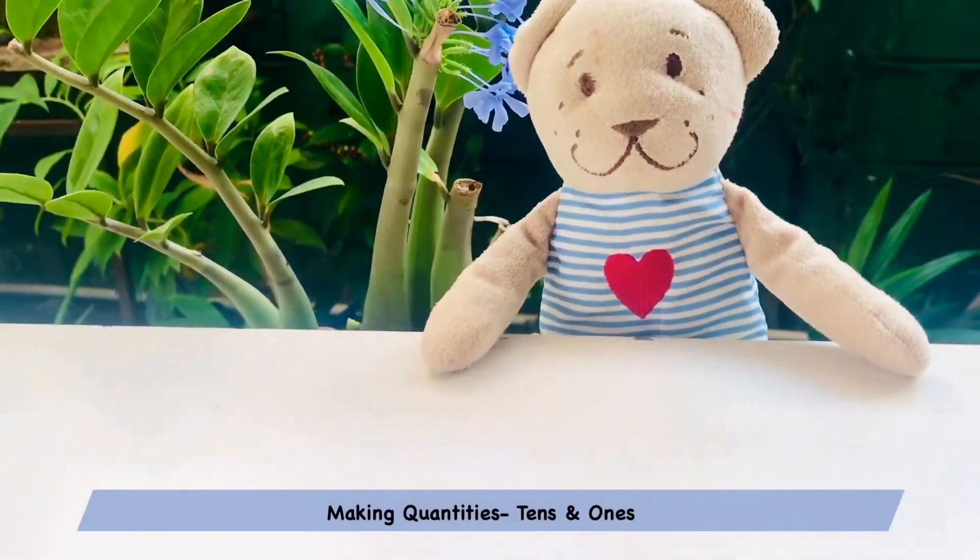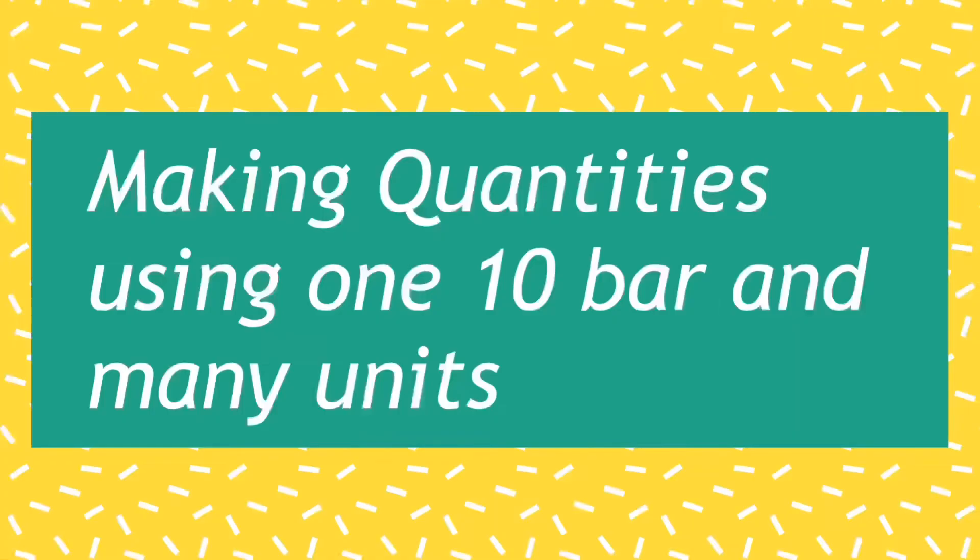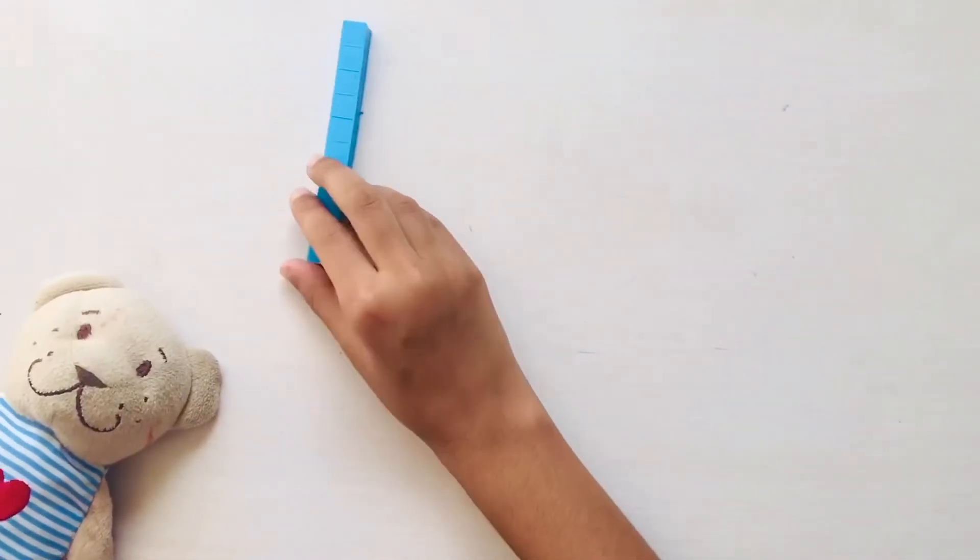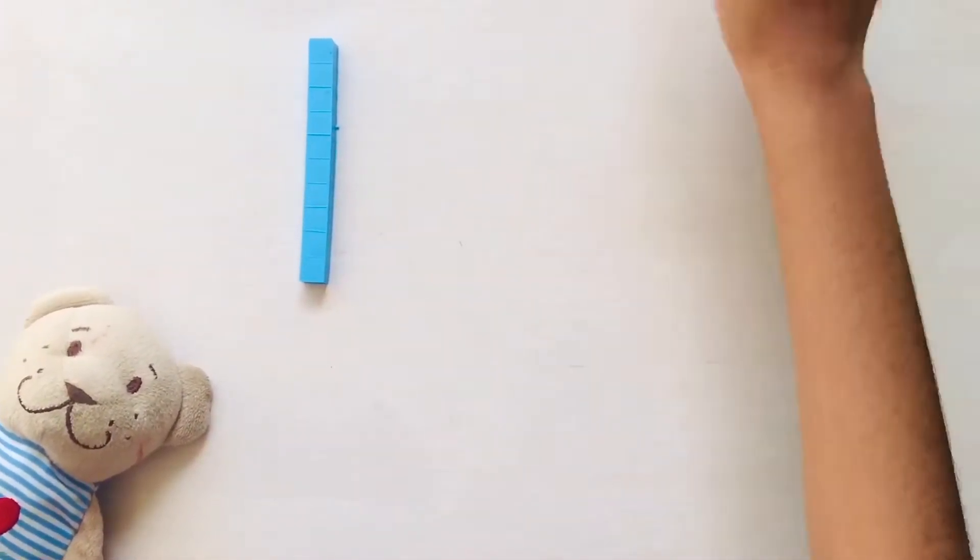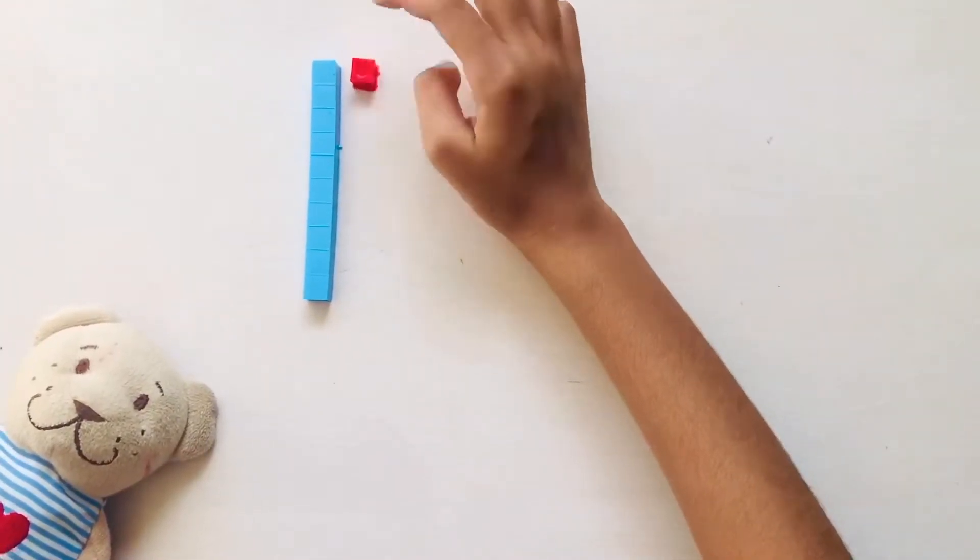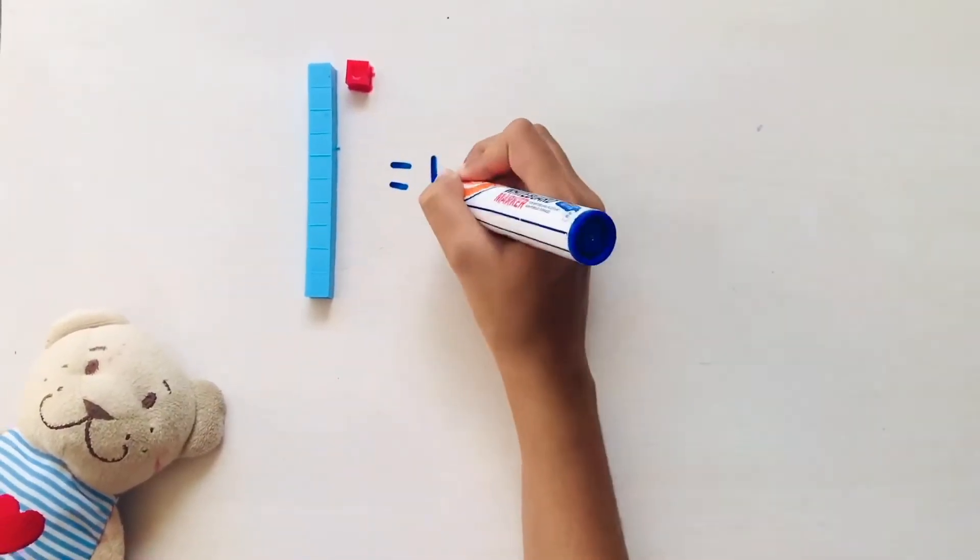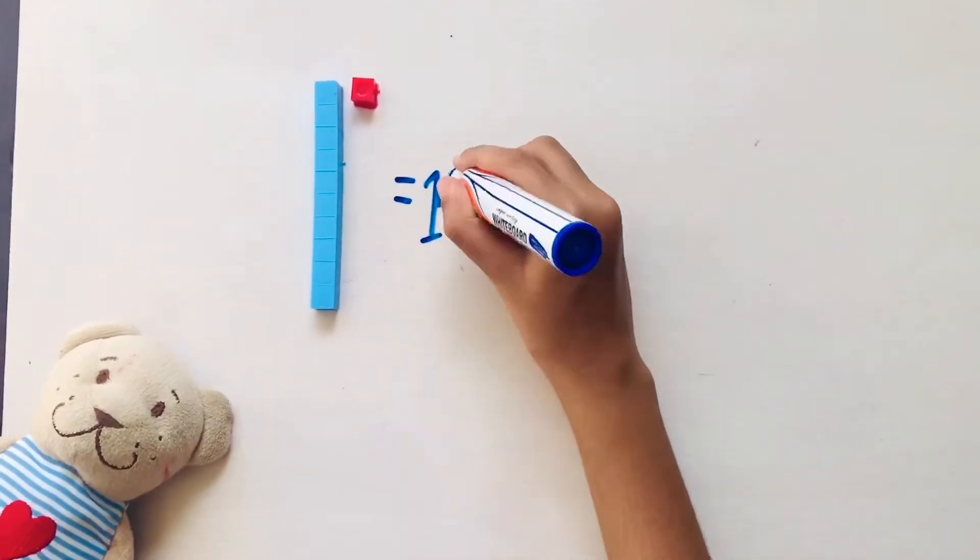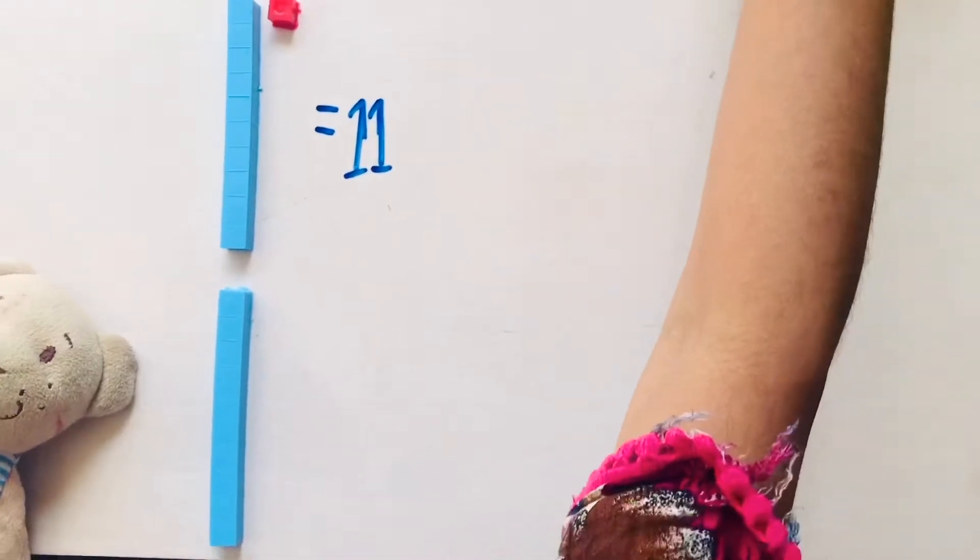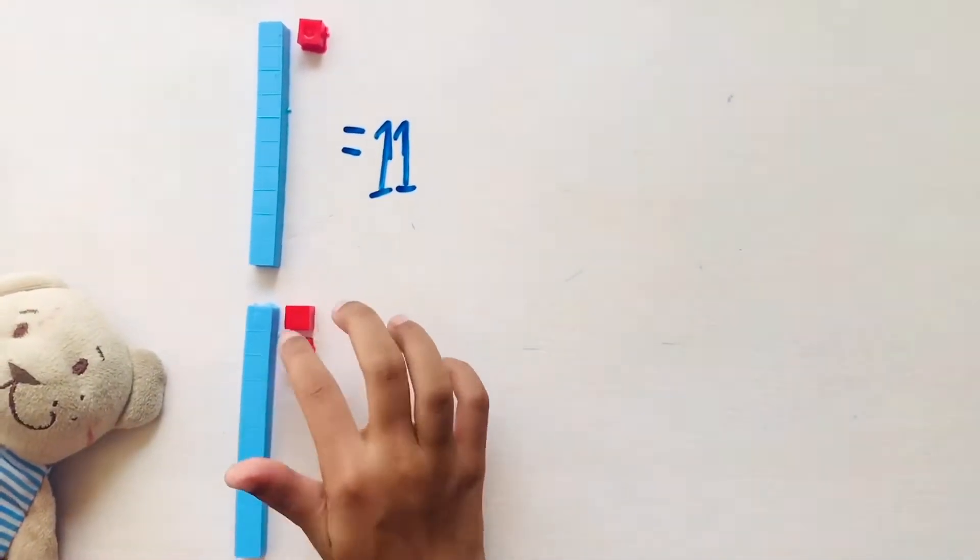Next we are going to learn how to make quantities using tens and ones. 1 ten bar and 1 unit makes 11. 1 ten bar and 2 units make 12.